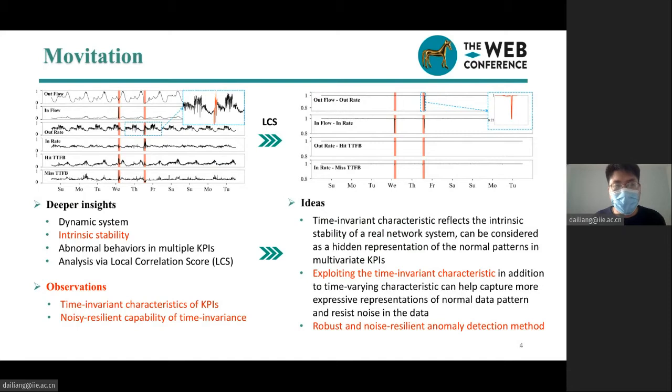Besides, we notice that an incident typically produces abnormal behaviors in multiple KPIs. We reveal the intrinsic stability of the CDN system by studying correlation between KPI pairs via local correlation scores. For the first observation, the correlation of time-variant characteristics, such as periodicity in univariate KPIs, shows that some KPI pairs are highly correlated with each other. More importantly, such correlation presents time-invariant characteristics, remaining unchanged for most of the time except for occurrence of anomalies.